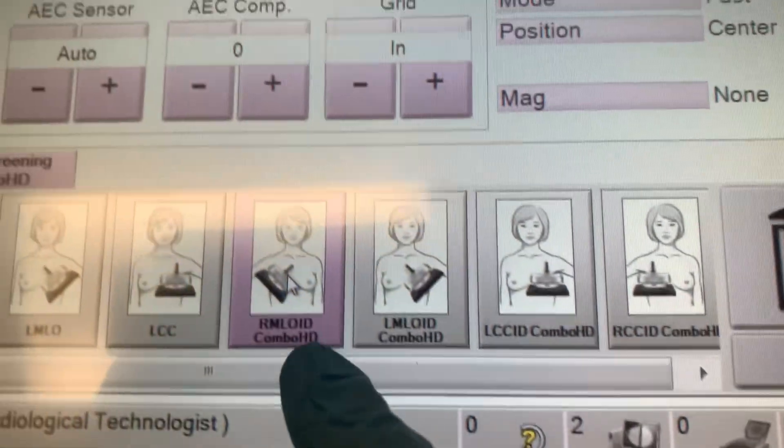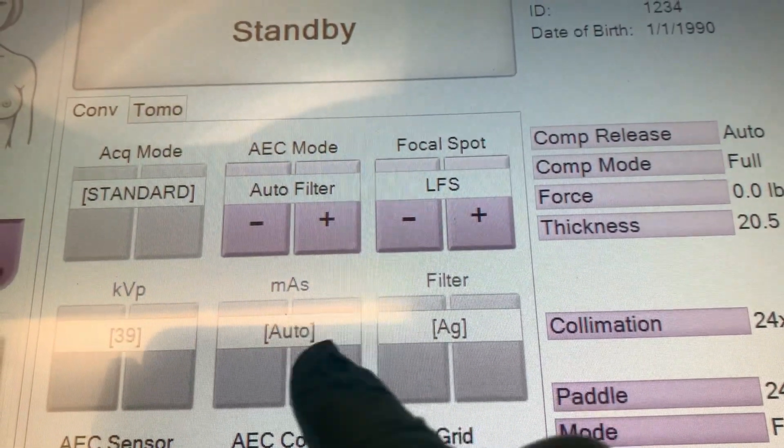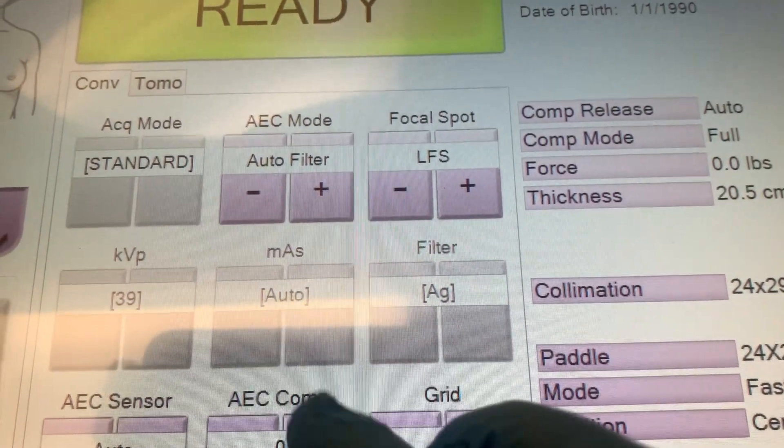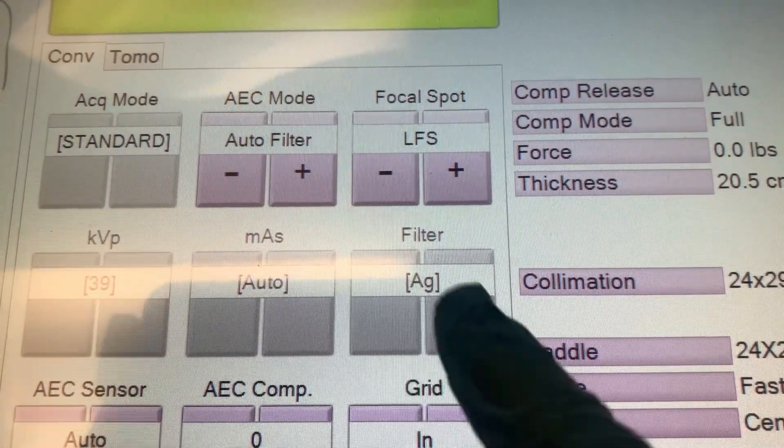So for your combo, this is going to be set with the automatic with AEC filter. So no mAs setting for that one. And you see how the filter changed.